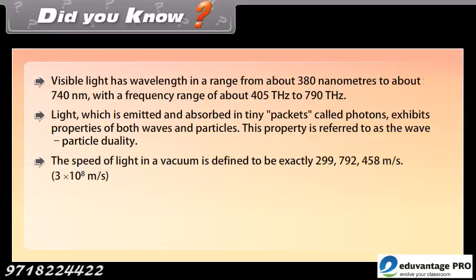The speed of light in a vacuum is defined to be exactly 299,792,458 meters per second, that is 3 times 10 raised to the power 8 meters per second.